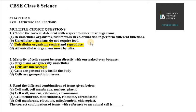Third question: read the different combinations of terms given below. We are asked for the correct combination of terms with reference to an animal cell — what is present in all animal cells. The correct combination that exists in animal cells is: cell membrane, mitochondria, ribosome, and chromosome. So the right option is C.